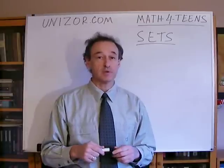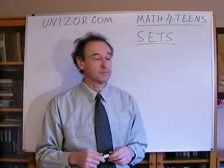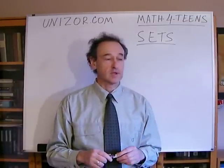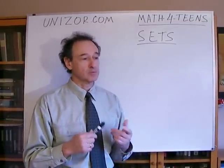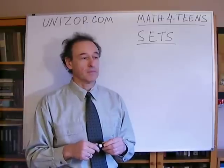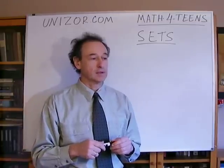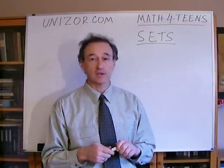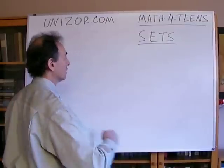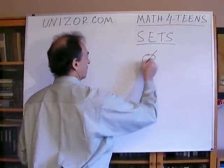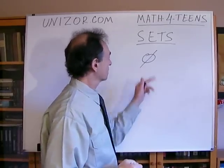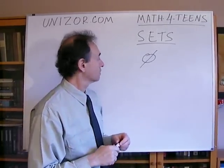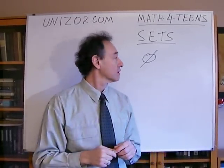Any object can be an element of some set. Without a rigid definition of a set, we can probably understand that you can introduce a concept of empty set — the one which does not contain any elements. In mathematics, it's usually signified as this striped zero.